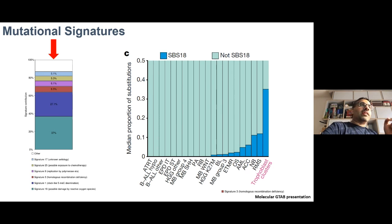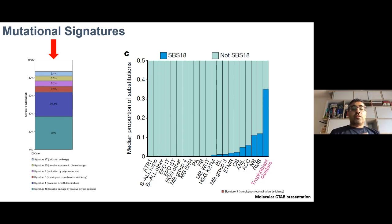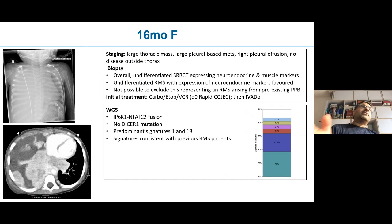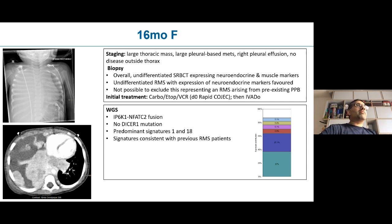Signature 18 is a cell-intrinsic mutational signature process. It's really quite unclear what causes it, but it is not ubiquitous — we only found it in a few childhood cancers and in the placenta. Looking at the contribution of Signature 18 to different childhood cancers, what you can see is that rhabdomyosarcoma is the cancer type with the highest proportion of Signature 18 mutations.